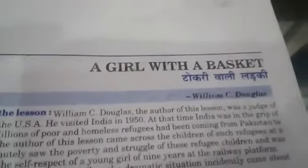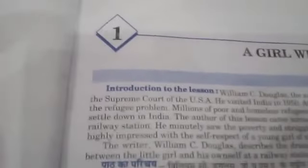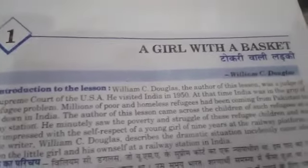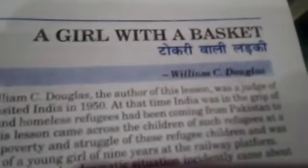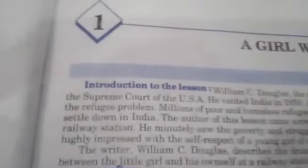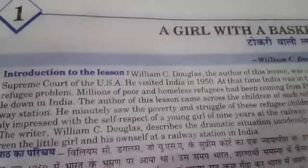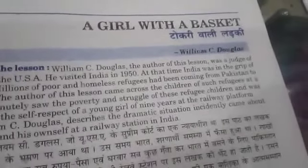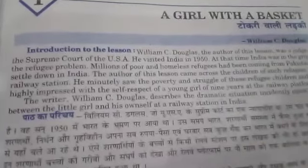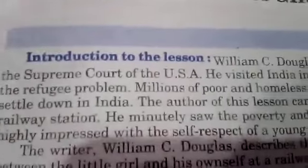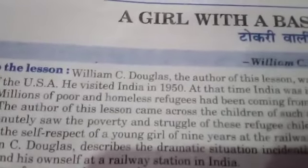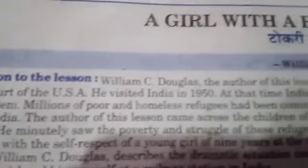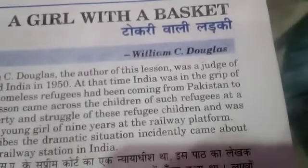Introduction to the lesson: William C. Douglas, the author of this lesson, was a judge of the Supreme Court of the USA. He visited India in 1950, at the time India was in the grip of the refugee problem. Millions of poor and homeless refugees had been coming from Pakistan to settle down in India. The author came across the children of such refugees at a railway station, and minutely observed the poverty and struggle of these refugee children. He was highly impressed with the self-respect of a young girl of nine years at the railway platform.